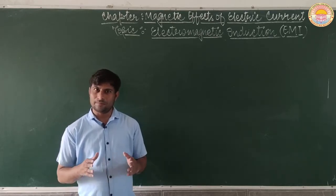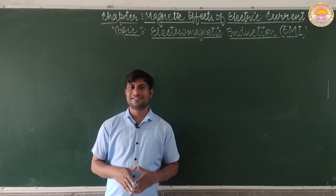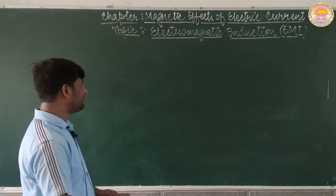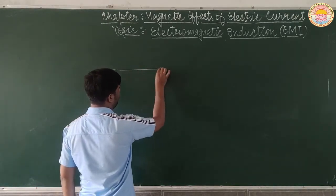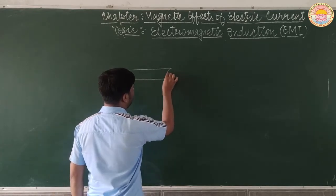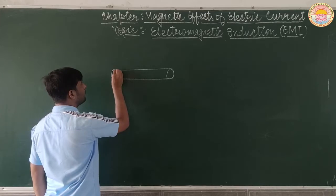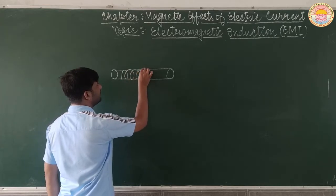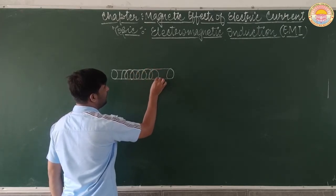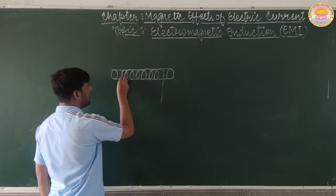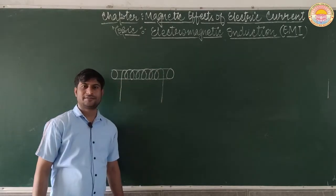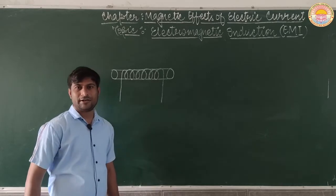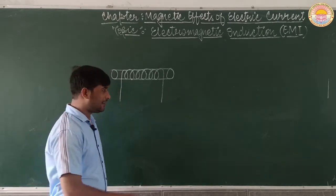To understand this better, we will perform an activity. For this activity, we take a solenoid — the arrangement of a number of turns of insulated copper wire on a hollow cylindrical object is known as a solenoid. We take a solenoid and connect it to a galvanometer.